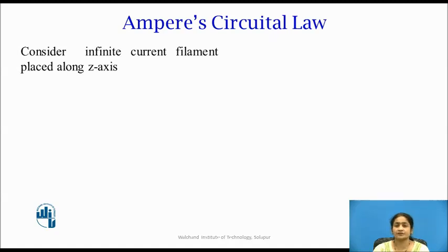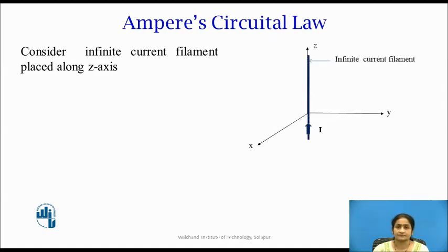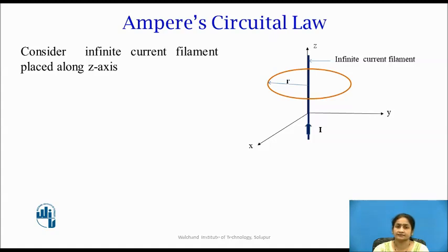Now let us derive this mathematical equation. For that, we will consider an infinite current-carrying filament placed along the z-axis. As shown in the figure, the infinite line filament carries a current i flowing through it. It is placed along the z-axis, and the magnetic field is created in the form of a circular loop of radius r.